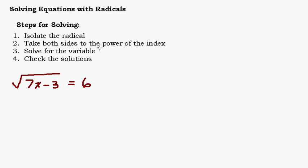Step number two: take both sides to the power of the index. When you have a radical, the index is this number right here. If it's not written, it's two — it's a square root. If it's a cube root, the index is three, etc. So since this is a square root, we want to take both sides to the second power.